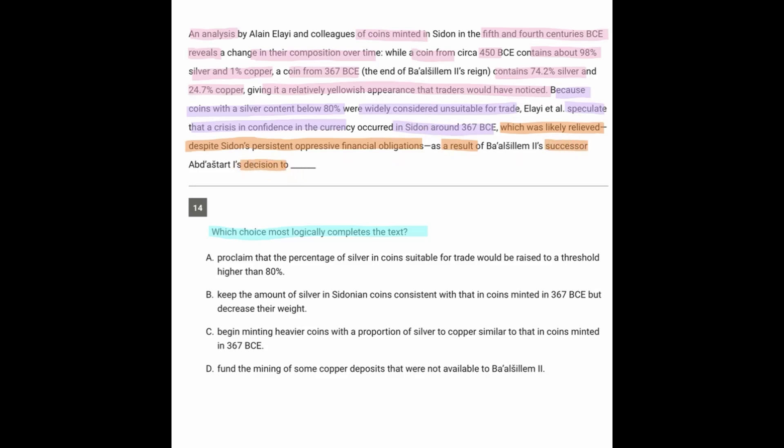So we're seeing here that originally the coins had a lot of silver, and later on they had less silver and more copper. But that was creating a yellowish appearance, traders were noticing, and there was a crisis in confidence in the currency. And finally, that crisis was relieved when a certain decision was made.